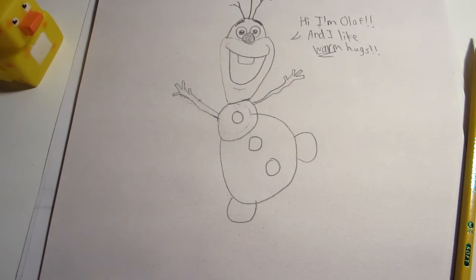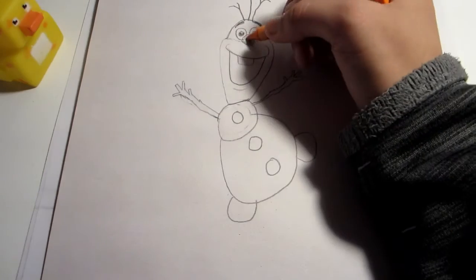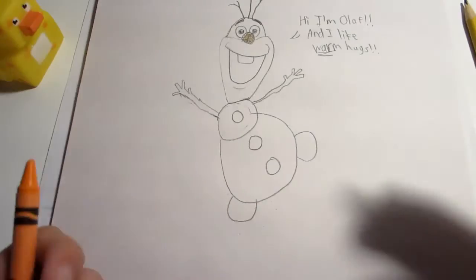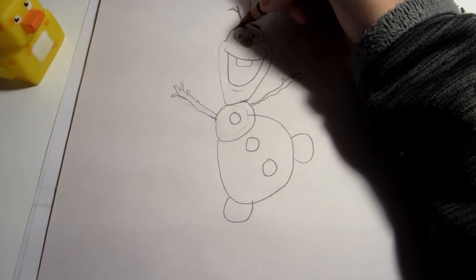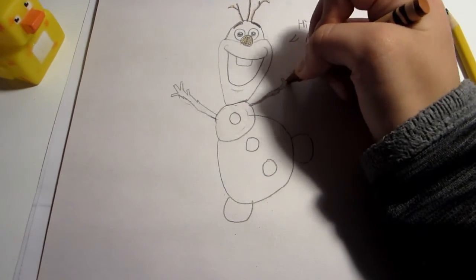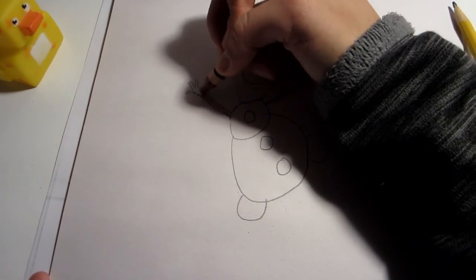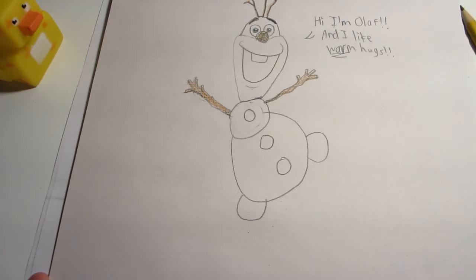Now we're going to color with the crayons. I'm going to color the nose orange because that's the color of a carrot. I think I colored the eyebrows brown, I believe. The arms are brown because they're twigs.